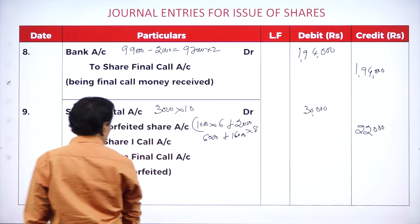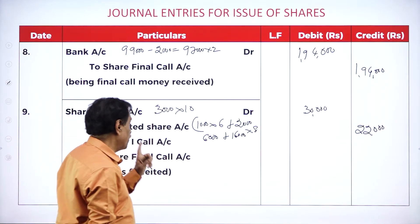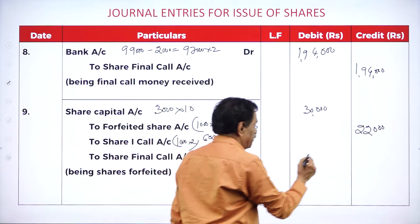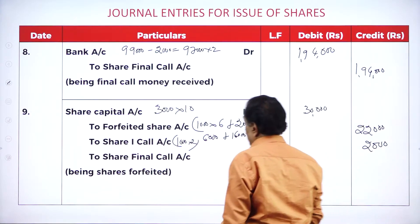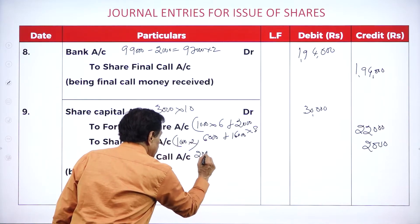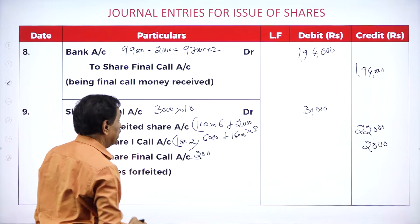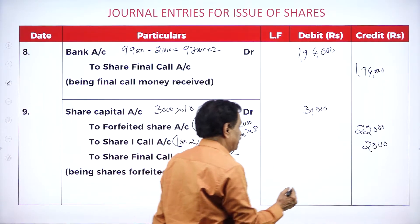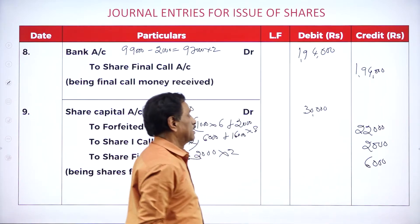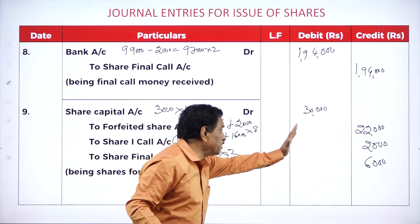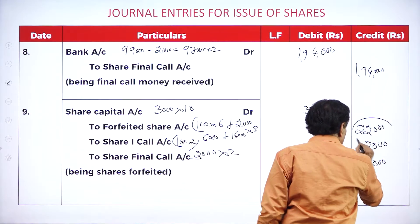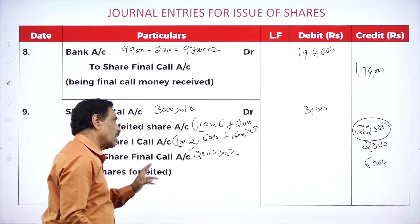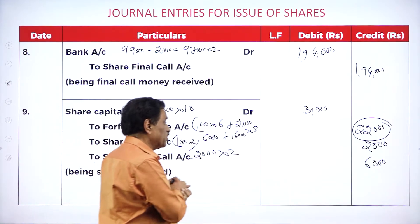Share first call account: one man holds 1,000 shares, first call money rupees 2 — 1,000 into 2 = 2,000 he failed to pay. In the final call, both failed: 1,000 of first man and 2,000 of second man, totally 3,000 into 2 = 6,000 failed to pay. Money to be received: 30,000. Already received: 22,000. Could not receive first call: 2,000. Final call on both: 6,000. So 30,000 minus 22,000 minus 2,000 minus 6,000 fails to pay.